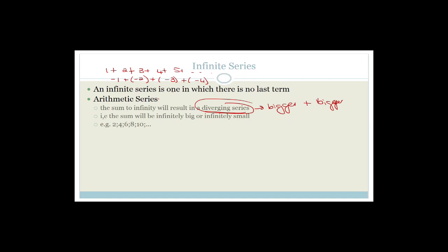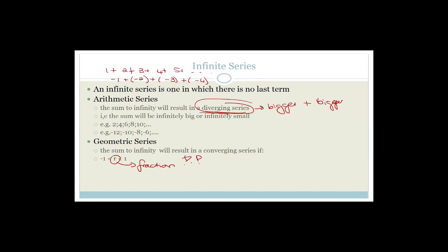As you can see, if the sum is 2, 4, 6, 8, 10, the numbers are getting bigger and bigger — that's a diverging series, where numbers are going away from each other. A geometric series is going to be converging if and only if the common ratio is between minus 1 and 1 — in other words, the common ratio has to be a fraction. If your common ratio is a fraction, you're multiplying the previous number by a fraction each time, so the number becomes smaller and smaller.